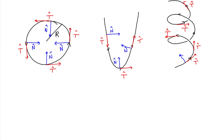For a three-dimensional curve, there is a principal unit normal vector that is orthogonal to the unit tangent vector at each of these points. Notice once again how the unit normal vector points towards the inside of the curve.